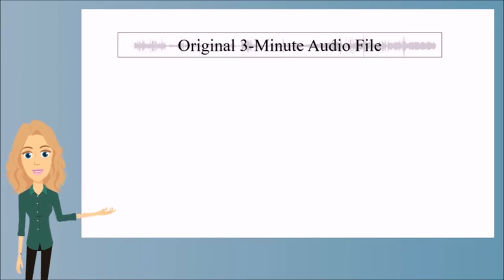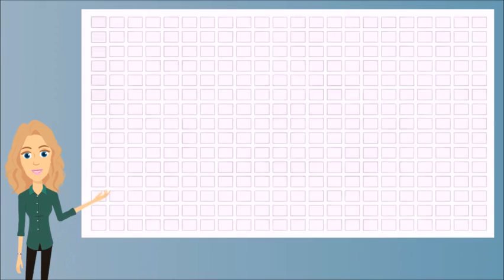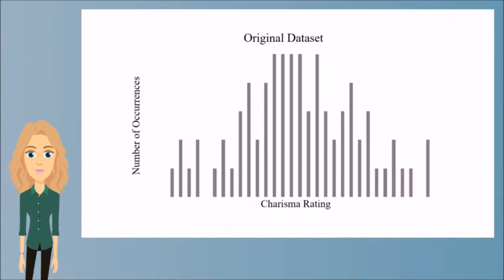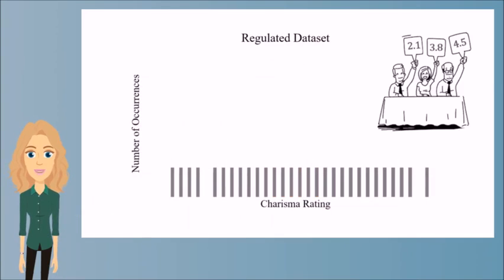We originally received 100 three-minute audio files, so we augmented the data by cropping each file into 30-second segments to create a larger data set. We noticed that there was a higher occurrence of a particular rating, which biased our results such that our algorithm was always predicting the same rating. To prevent this bias, we regularized the data set so that all ratings occurred the same number of times.